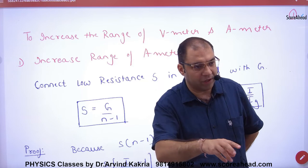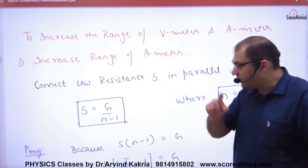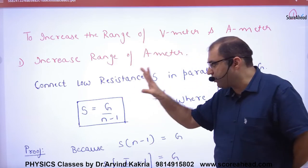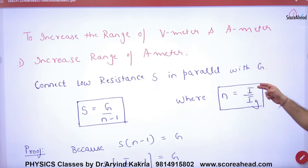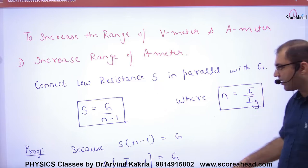From I_G, you put a shunt and use this formula of shunt: G upon (N-1), where N is equal to the range of ammeter. The galvanometer current is I_G. So when we put it here,